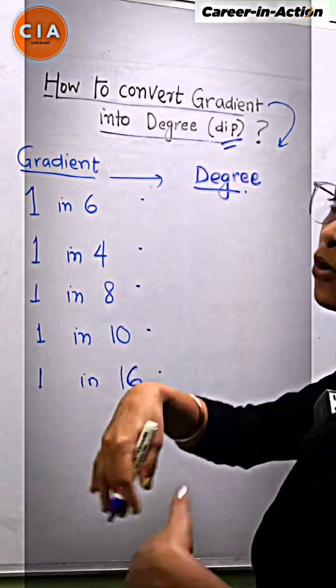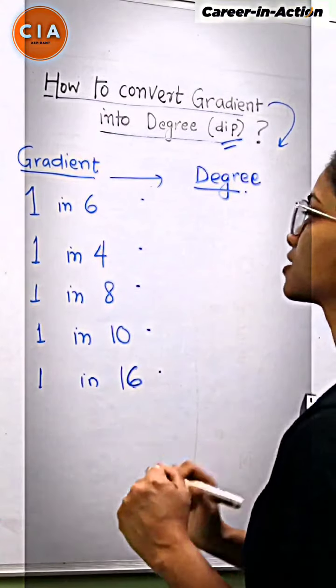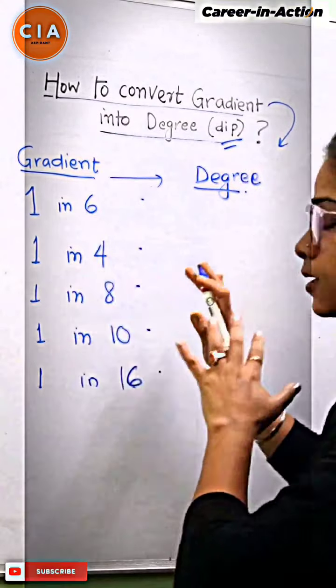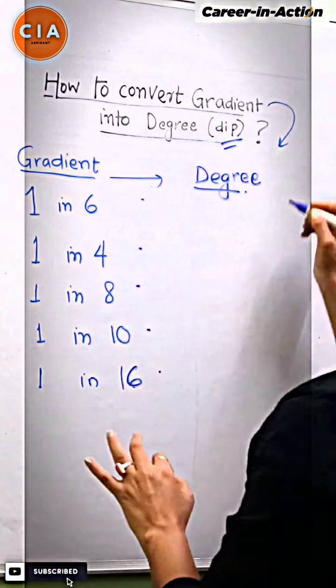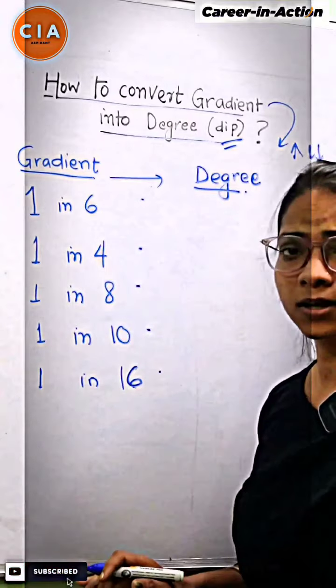How do we convert the gradient into degree? Is it a trick or an easier trick? Absolutely, it is an easier trick you can understand. First, you will understand what gradient is. Gradient means the degree at which our road goes up and down. This is the understanding of gradient.